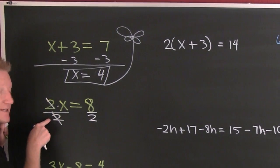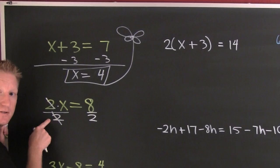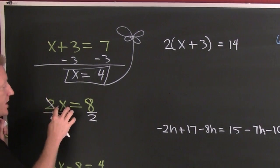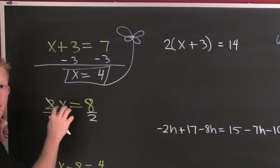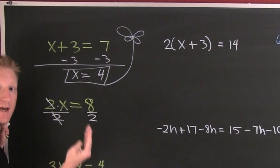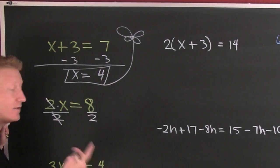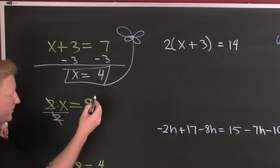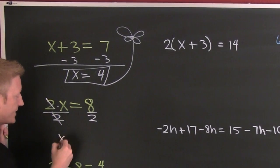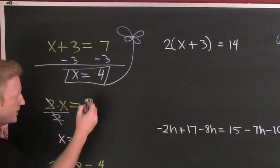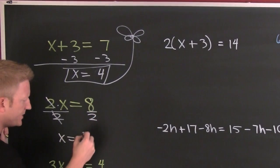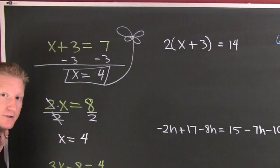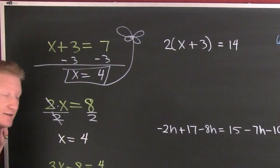I have two divided by two, which is one. And one times x is just x by himself, and that's our goal. X is equal to — eight divided by two — four.